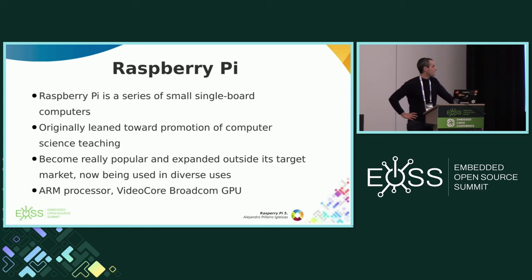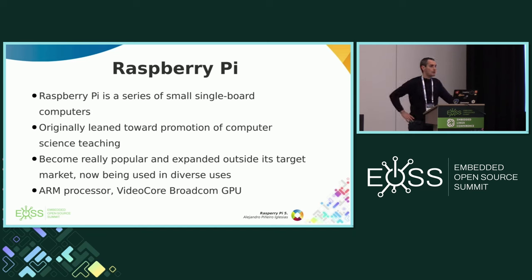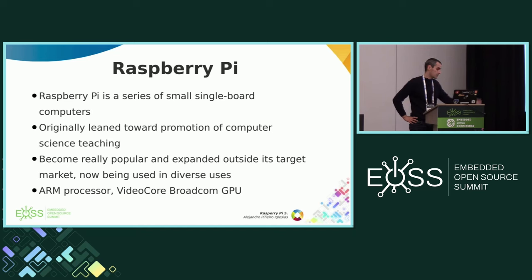So, what is Raspberry Pi? Raspberry Pi is a series of small single-board computers. The original purpose of these boards was really leaning towards computer science teaching, but it became a very popular device, so it expanded out of that target and is now also used in industry and other cases. The processor is ARM and the GPU is VideoCore from Broadcom.